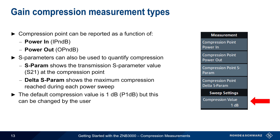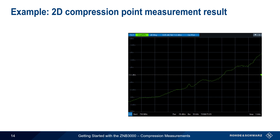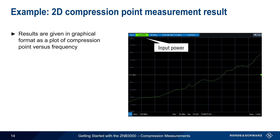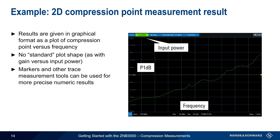The default compression point for all of these types is 1 dB, but this can be changed by the user. Here is an example of a 2D gain compression measurement for Input Power Compression Point. The results are given graphically as a plot of compression point — here P1dB — as a function of frequency. Unlike traditional gain compression curves of gain versus input power, this 2D compression measurement curve doesn't have a standard shape, although compression point often changes as a function of frequency. Markers and other standard trace measurement or statistical tools can be used to obtain more precise numeric results if needed.